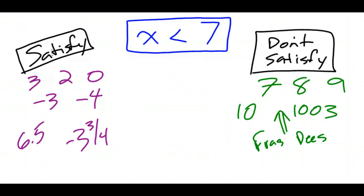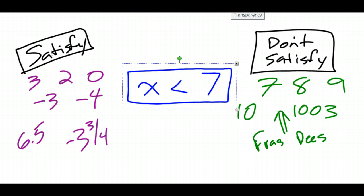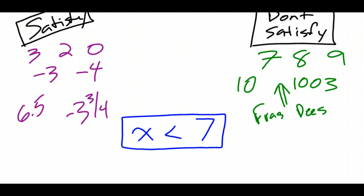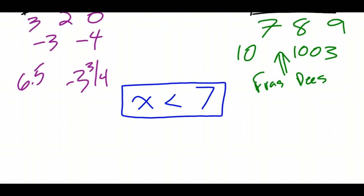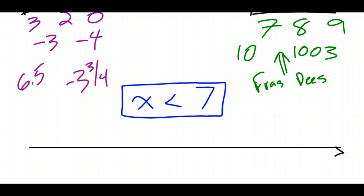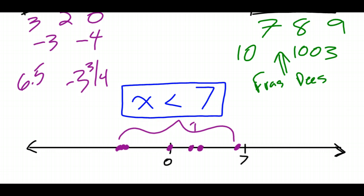Knowing which numbers satisfy and don't satisfy x is less than 7, let's take a look at these numbers on a number line. We draw our number line with 0 and 7 marked. Numbers less than 7 — 0, 2, 3, 6.5, negative 3, negative 4, negative 3 and 3 fourths — all shown in purple all make this inequality true. They are part of the solution to the inequality.